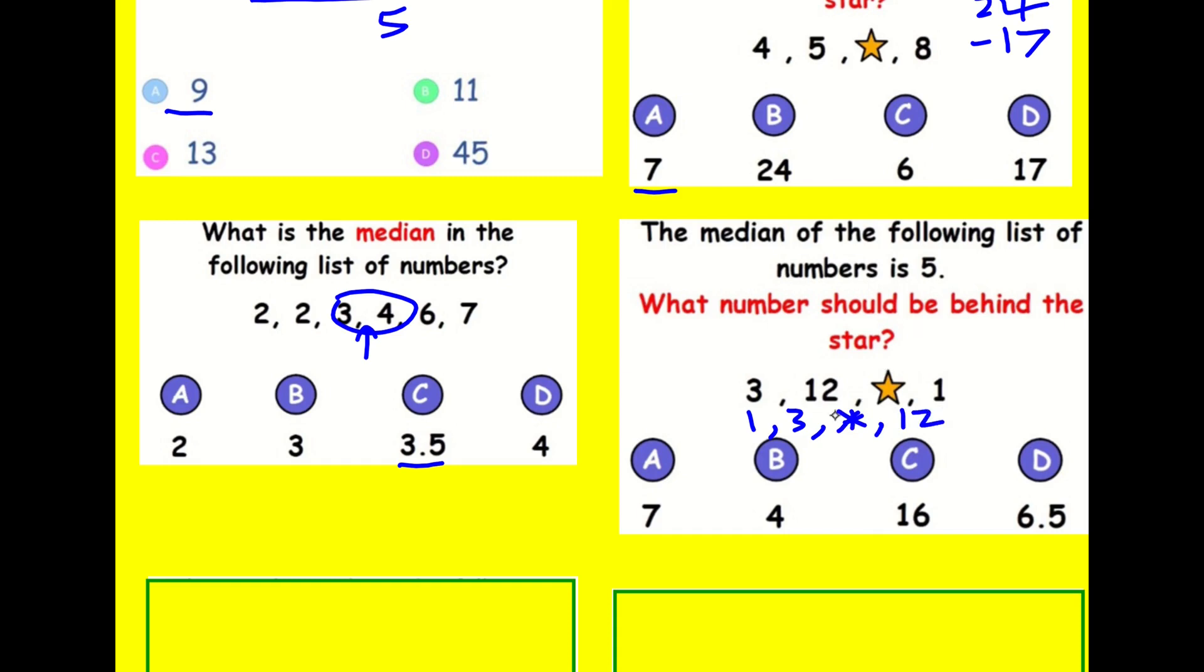And then for it to be 5, right, I know this middle bit, the average between 3 and star is going to be 5. So it's got to be 7 for this to work, because I'm going to find the average of 3 and 7. That's 5.